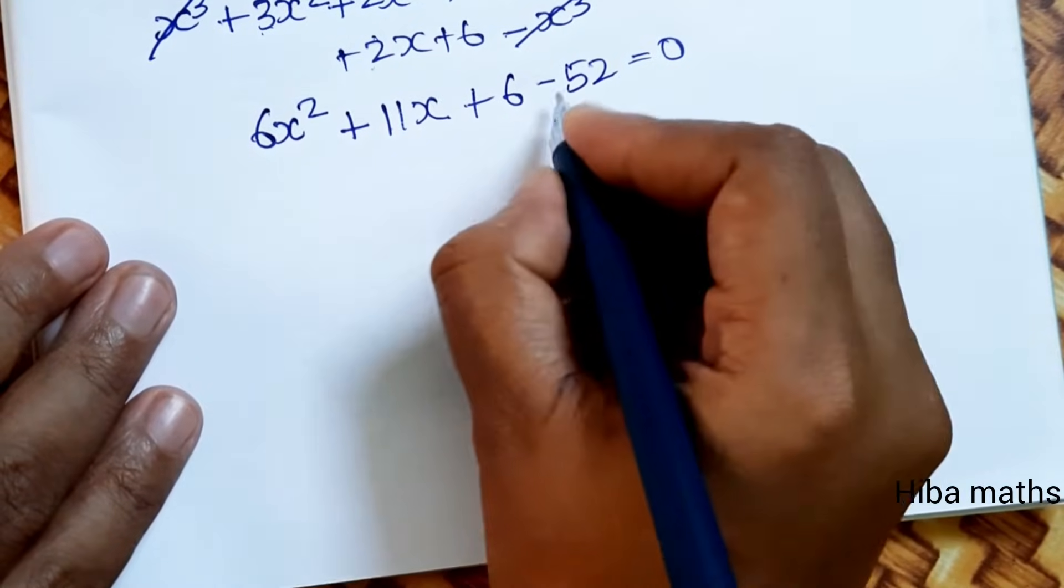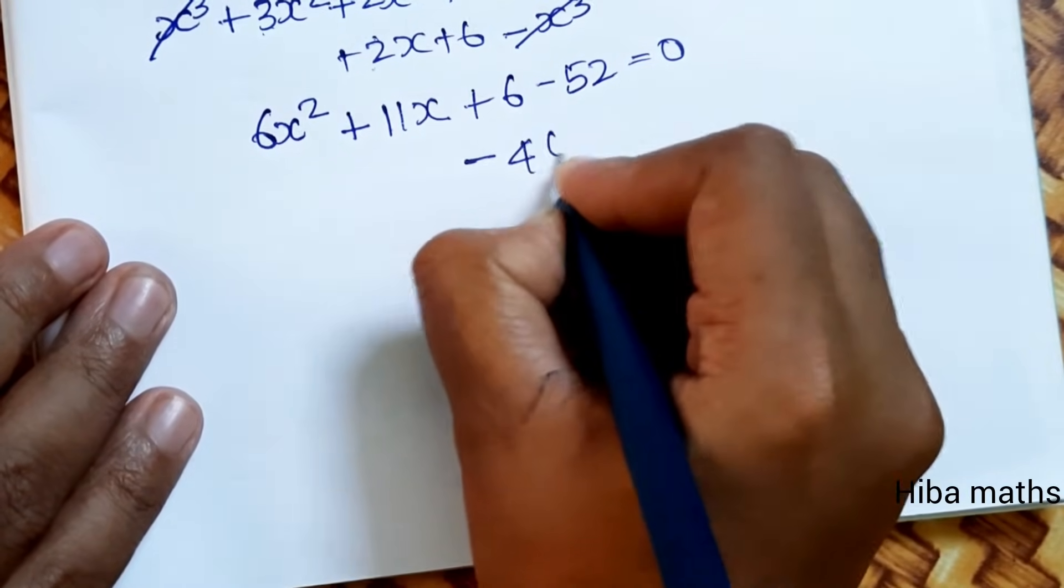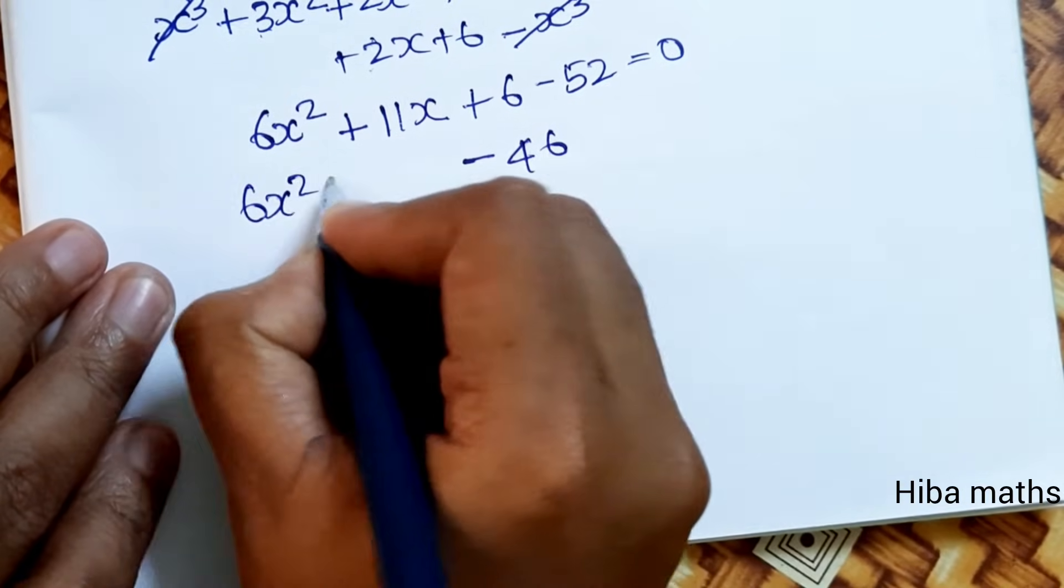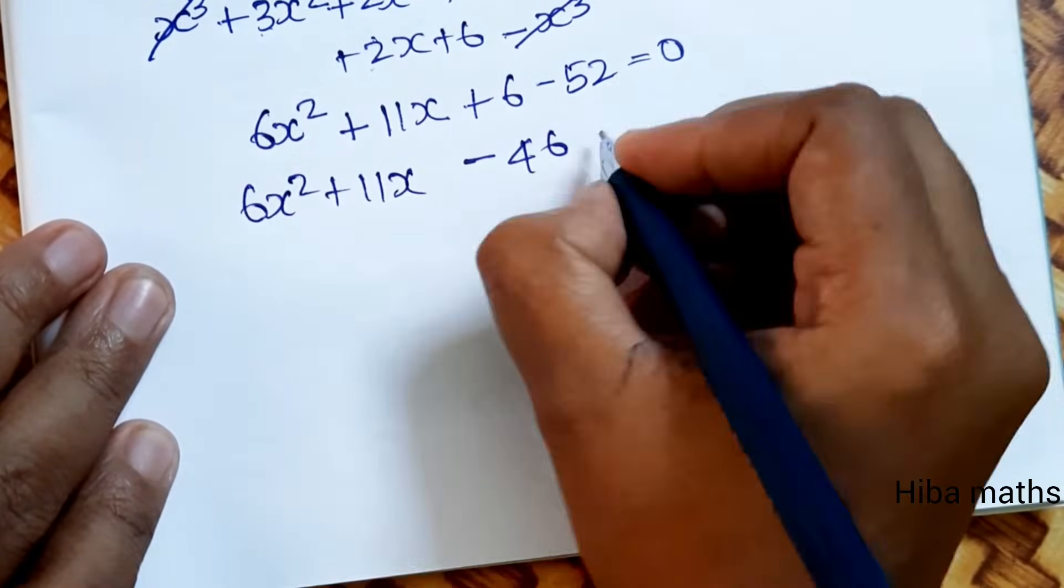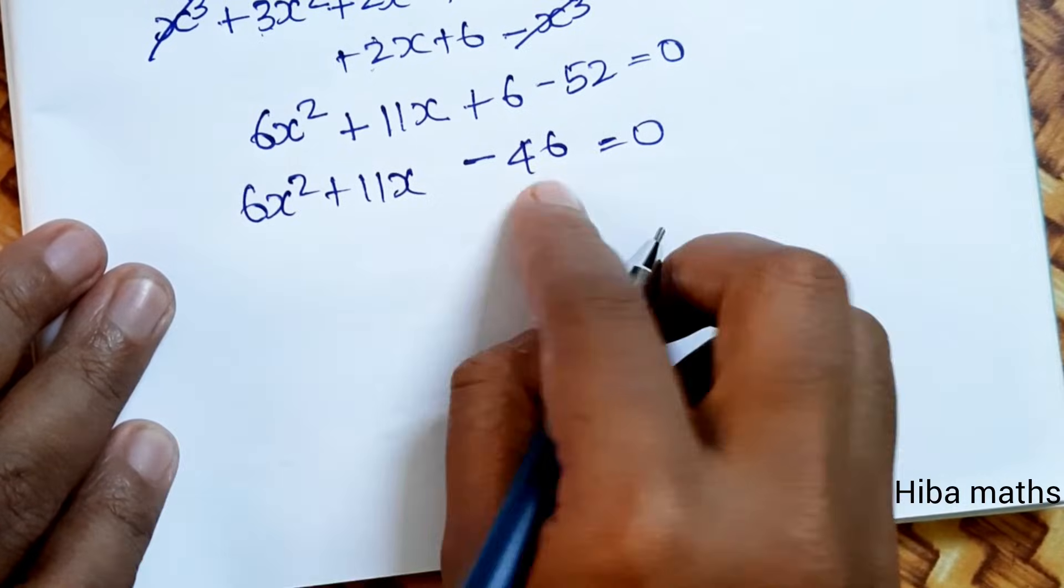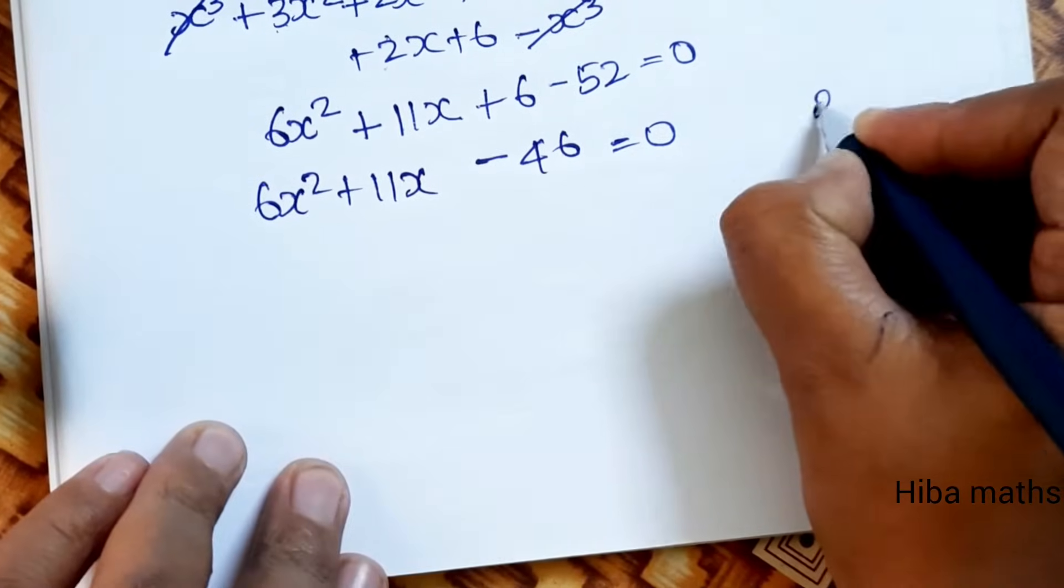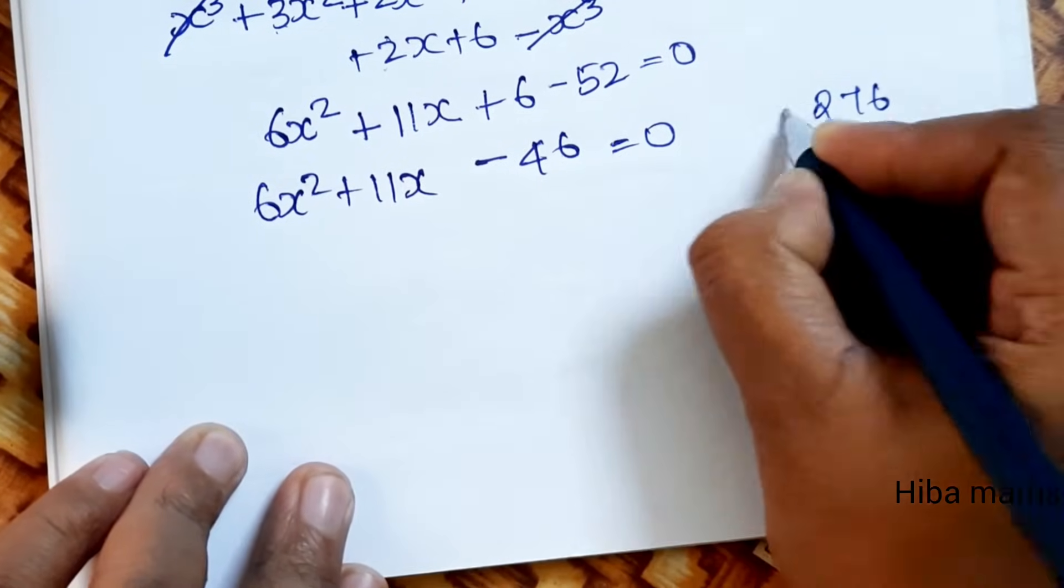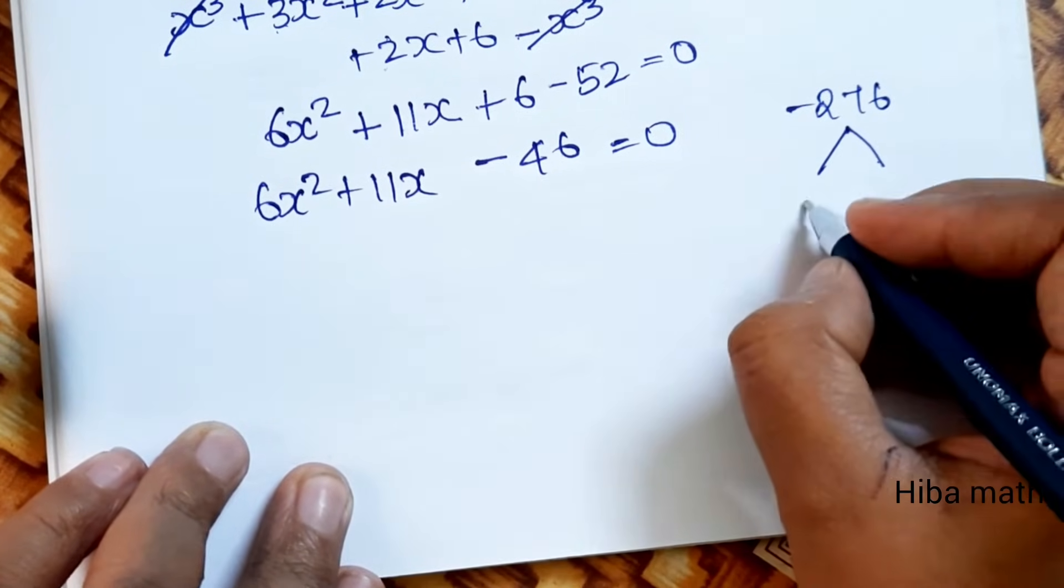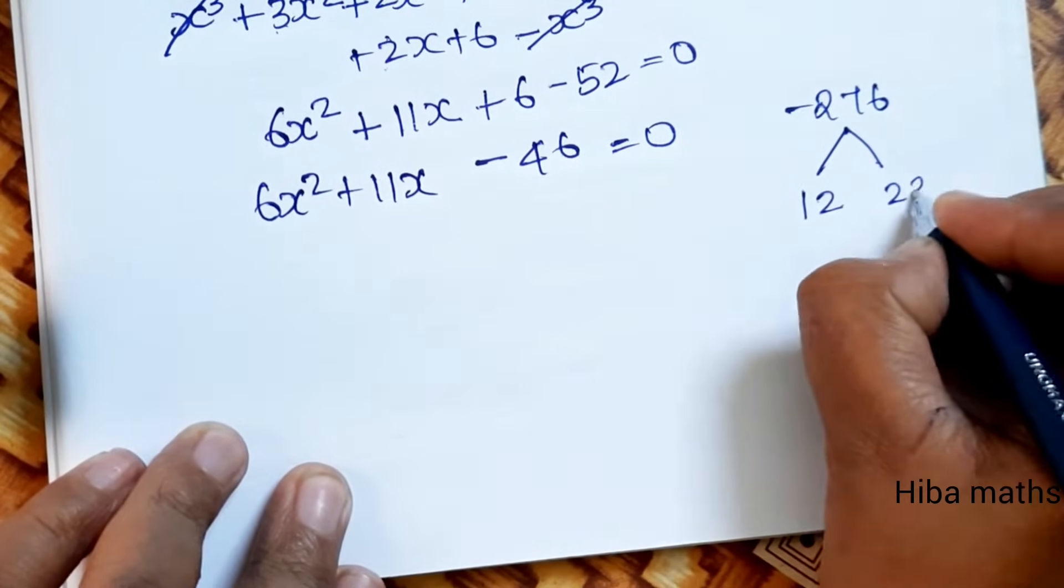Plus 52 to the minus side minus 52 equals 0. 52 minus 46 equals, minus 46 equals 0. So 6x squared plus 11x minus 46 equals 0. Now 6 into 46 is 276.